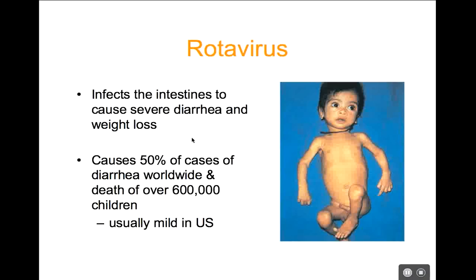Rotavirus is generally relatively mild in the United States because our infants are healthy enough to survive the infection. But it can be really serious in other parts of the world — living conditions have everything to do with rotavirus severity. Generally treatment involves replacing fluids and giving electrolytes, such as putting your kid on PediaSure and keeping them well hydrated.